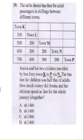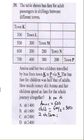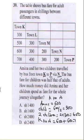For the journey from K to N, Amina spent 600 shillings — that's the adult bus fare. The bus fare for children is half that of adults, which is 600 over 2 = 300 per child. For her two children, it's 2 times 300 = 600. So from K to N, they spent 600 plus 600, which gives us 1,200.